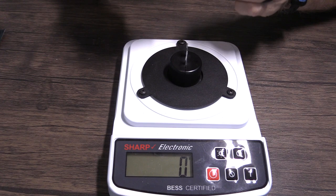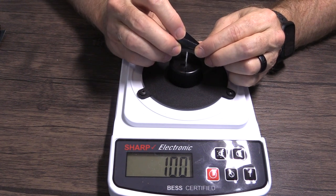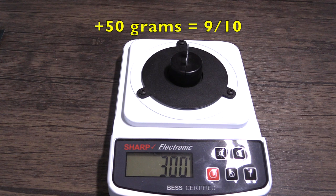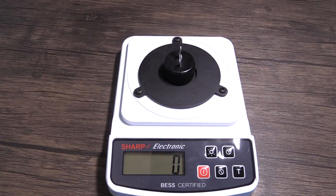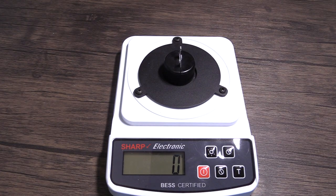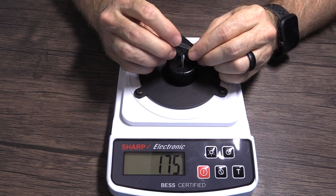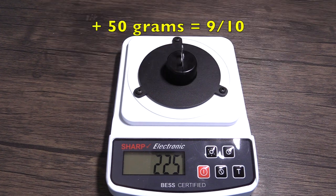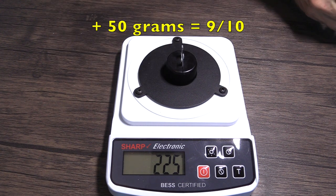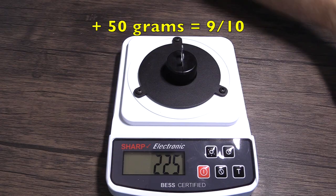First, the 26 degree bevel edge retention. It took an additional 50 grams of force to cut through the wire, which is a 9 on a 10 point scale. Now we'll test the edge retention of the 40 degree micro bevel head. It took an additional 50 grams of force to cut through the wire, which is a 9 on a 10 point scale.